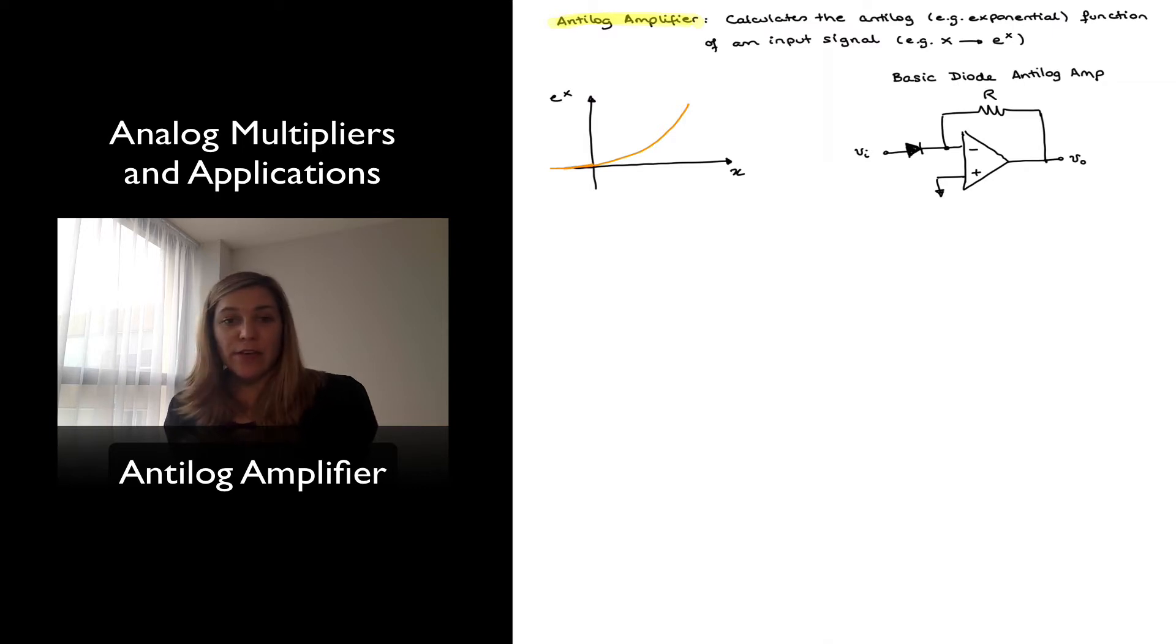On the left-hand side here, I've represented the mathematical function graphically of e to the x versus x, and on the right-hand side I have a basic diode-based anti-log amplifier. Notice it is the same configuration as the log amplifier, except we have swapped the locations of the resistor and the diode.